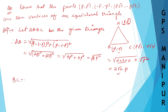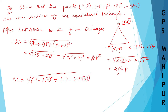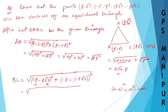Now let's find BC. BC will be equal to root over (-P minus P√3) squared plus (-P minus P√3) squared. Now we are going to use the A minus B whole square formula: A minus B whole square equals A squared minus 2AB plus B squared.